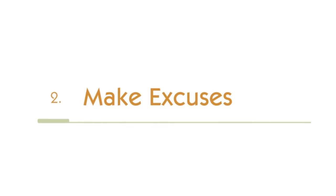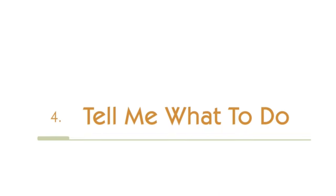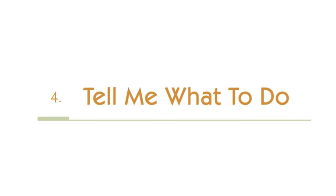Number 2 is to make excuses — why you can't do something, or saying things like 'we've always done it that way.' Number 3 is finger pointing: constantly blaming somebody else for something that's gone wrong. That language is pretty easy to identify when it's happening. Number 4 is 'tell me what to do' — statements like 'you've never showed me' or 'I was never trained.' Those types of statements fall into that category.